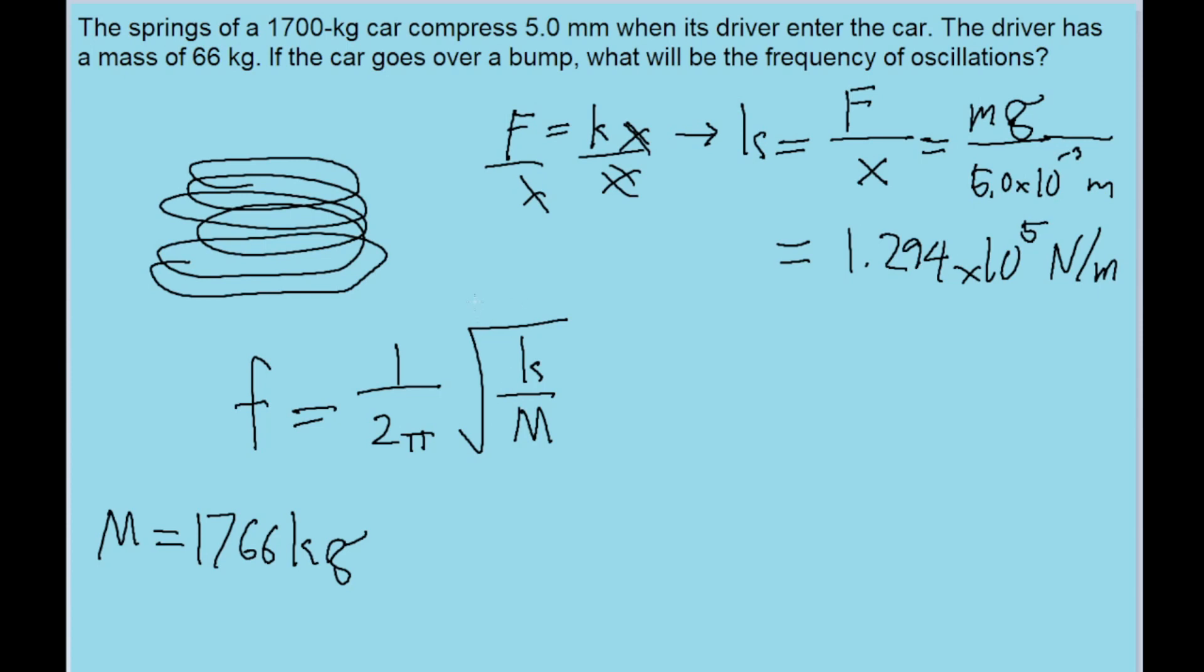Since, in the case of the car going over a bump and oscillating because of that, it's this full mass that is going to be the effective mass at the end of the spring. So we put these numbers into our calculator, and we find a frequency of about 1.362 hertz.